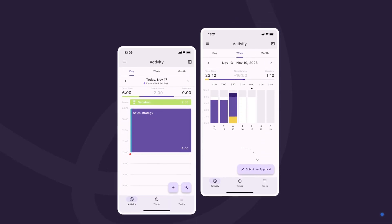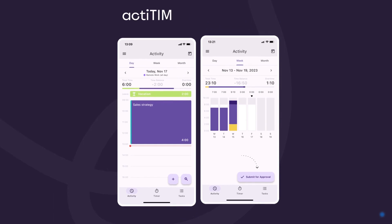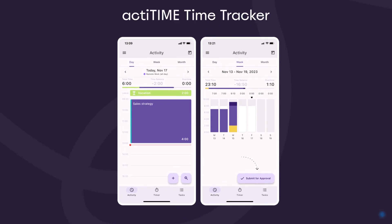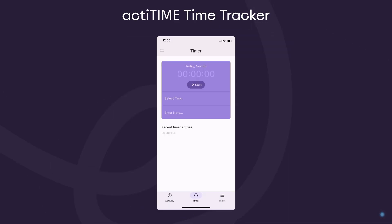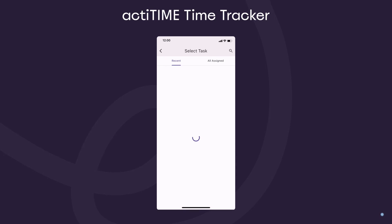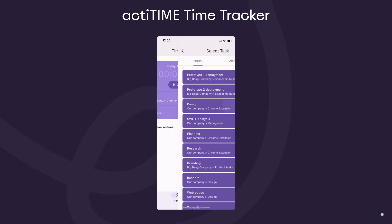The third method is the mobile app that lets you track hours using one-click timers, even if you're offline. Just select a task and tap the timer when starting to work.